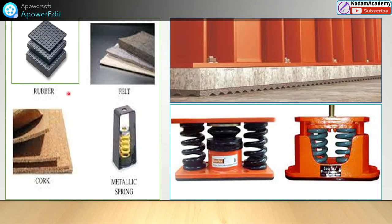Here are some pictures of vibration isolating materials. First is rubber — it is generally used in various industries as an isolator when the load is light and the frequency of vibration is high. The properties of rubber are affected by heat, oil, and gasoline, so it cannot be used in high-temperature applications. The rubber pad is placed between the machine body and the foundation.